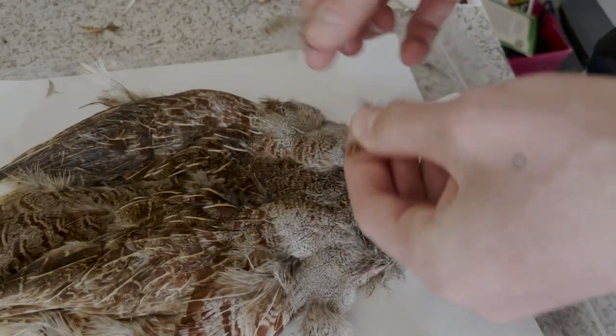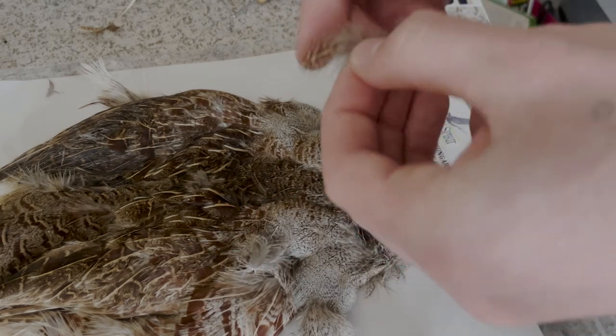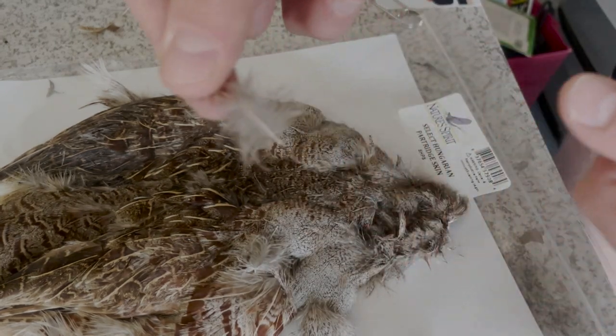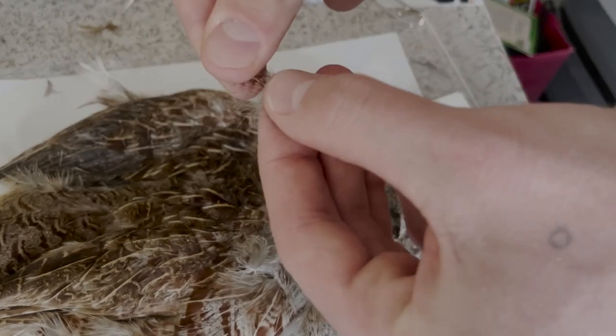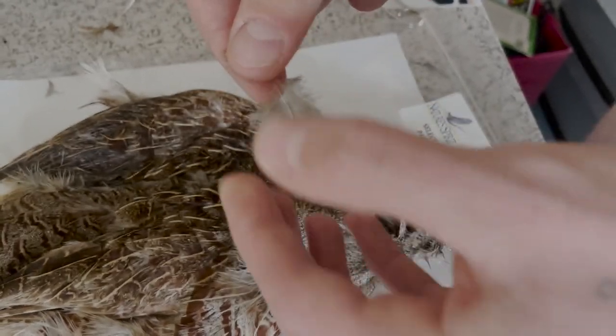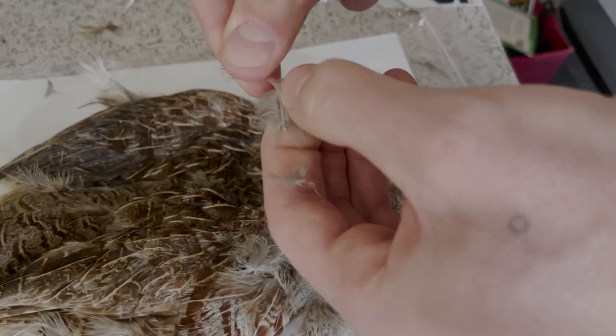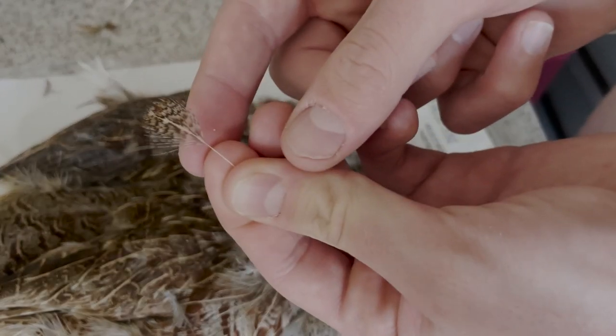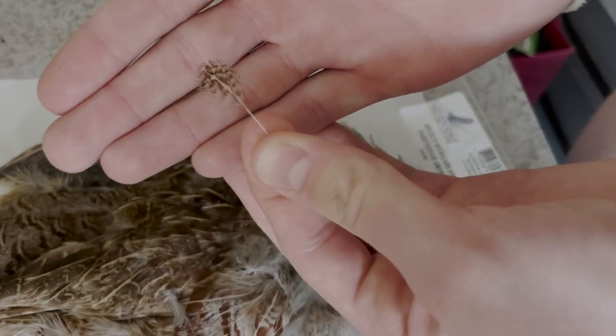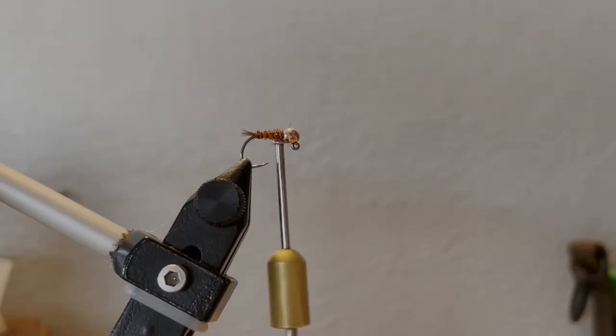Once you've plucked it off, you want to strip out these fuzzier fibers and you're left with just the nice barred markings and the stem, just like that. Then we can take this and tie it into our fly.